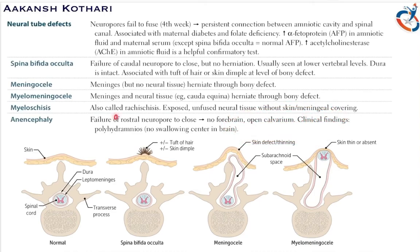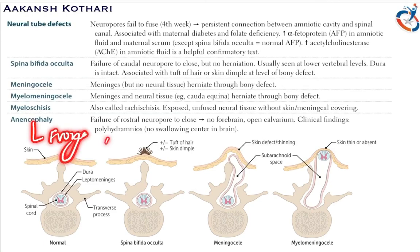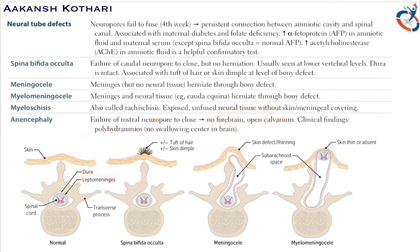In anencephaly, there is failure of the rostral — cranial — neuropore to close. There is no formation of the forebrain; the forebrain is completely absent, and there is an open calvarium. The fetus with anencephaly produces polyhydramnios because there is no swallowing center in the brain. Anencephaly presents with a frog-shaped face because the forebrain is absent.